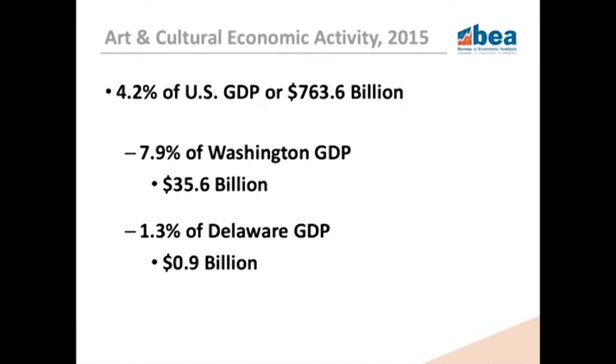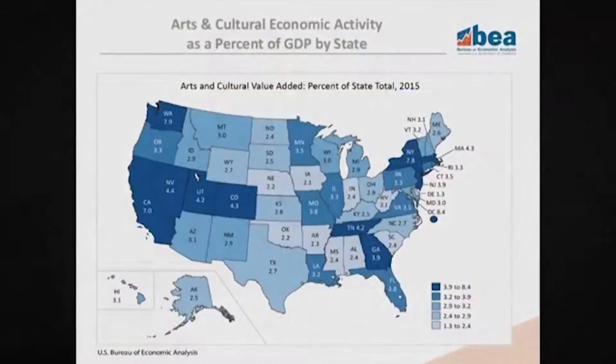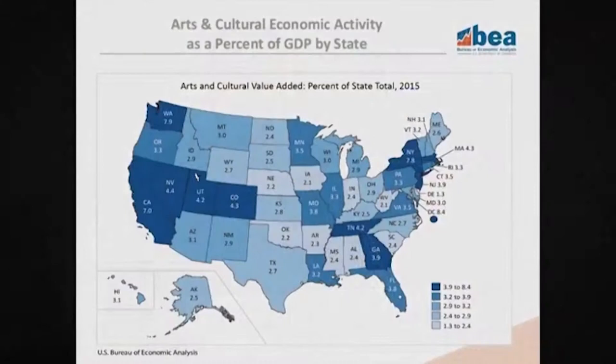Across states, arts and cultural economic activity ranged from 7.9% of state GDP in Washington to 1.3% of state GDP in Delaware. Here we see a U.S. map by state that shows the percent of state GDP accounted for by arts and culture. The states shaded in deep blue are states where arts and culture contributed a larger percentage to that state's GDP.